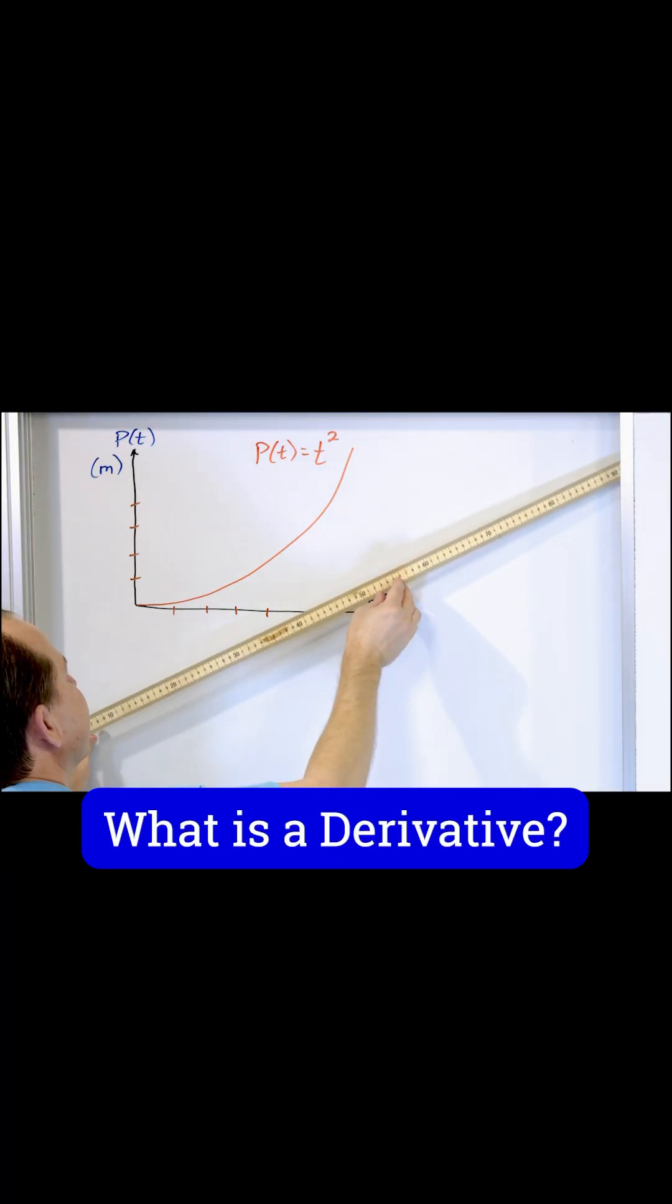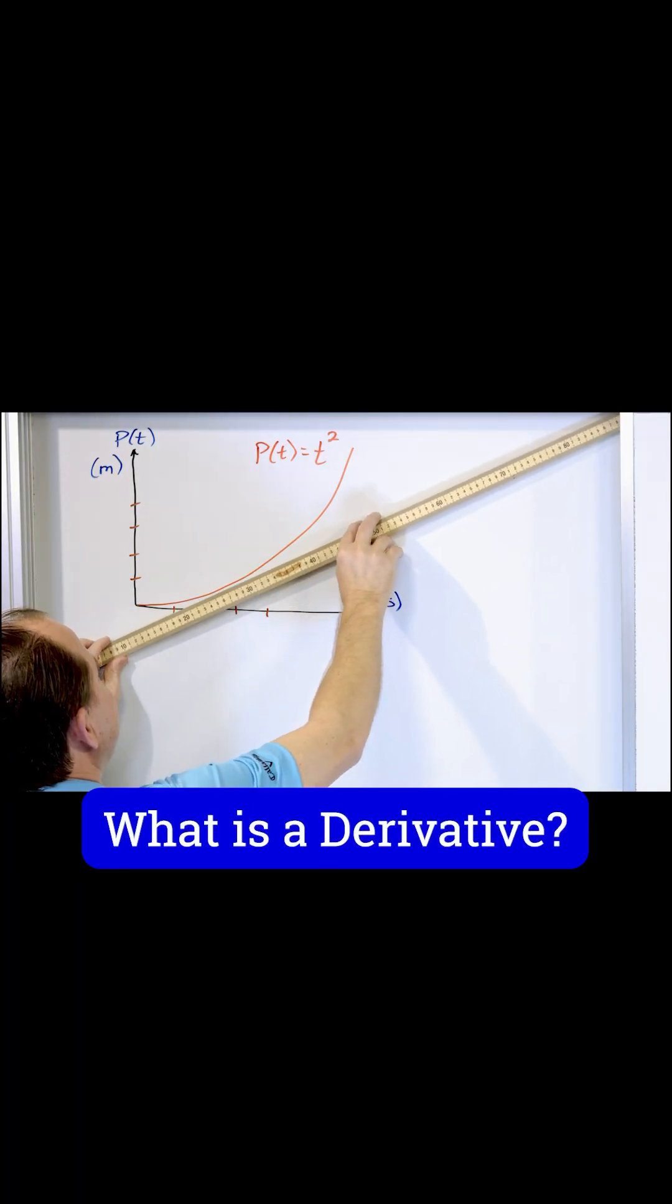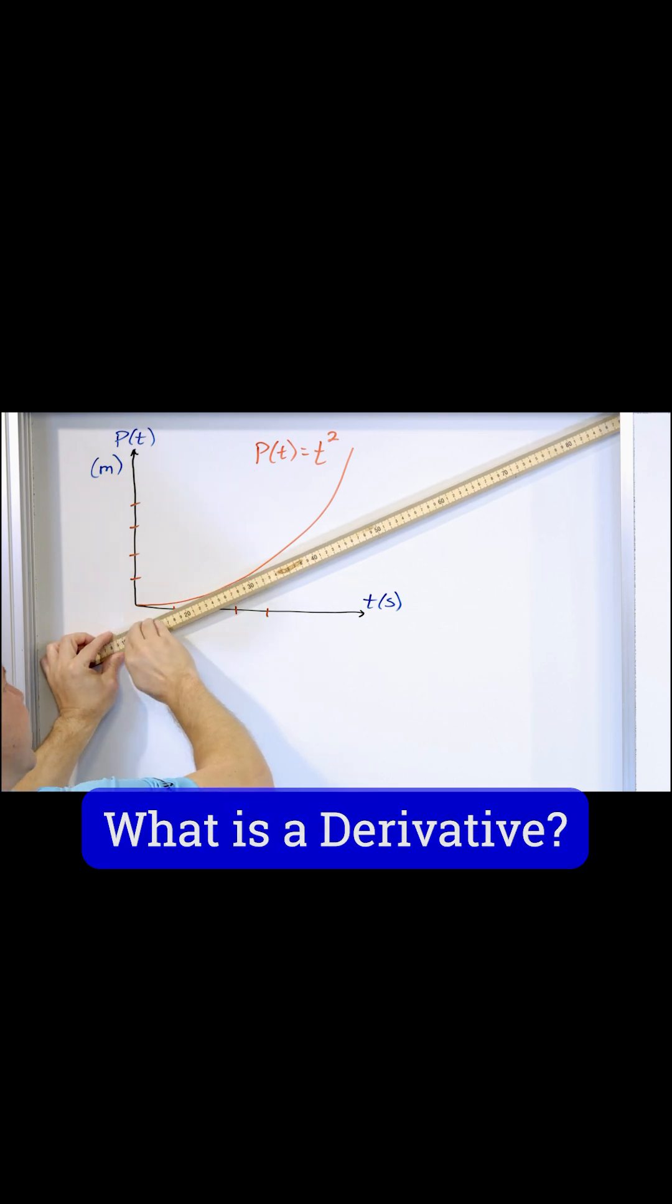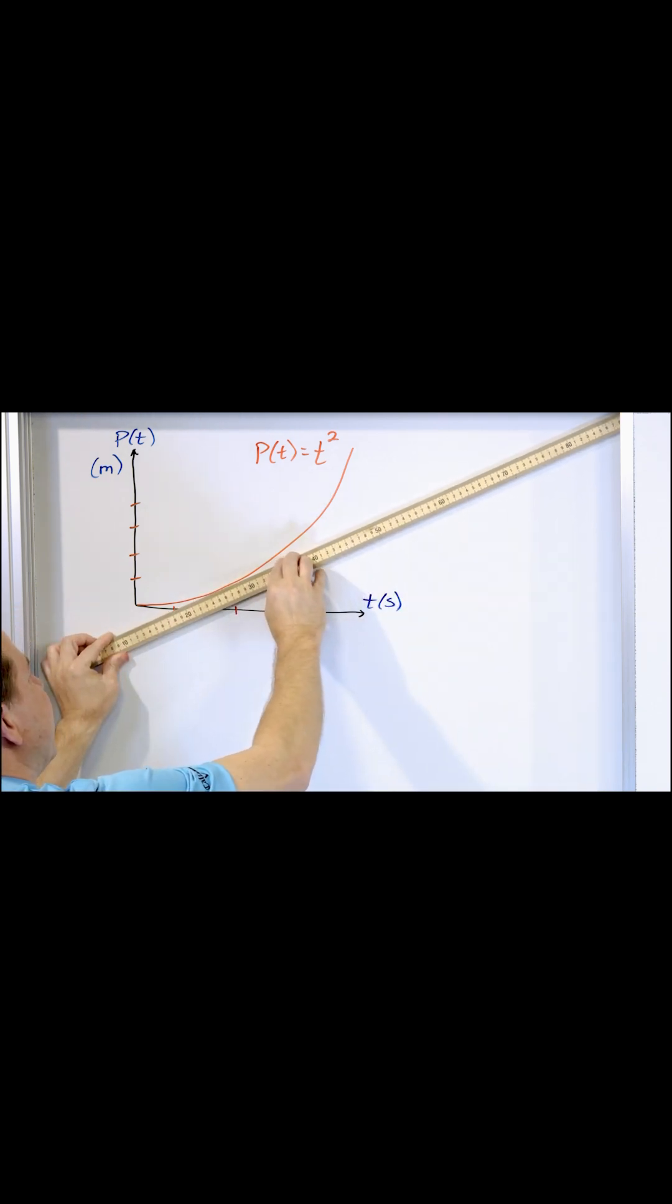In calculus, the slope of the line or the rate of change of something is the slope of the line that is tangent, which just means barely touching at one point on the curve.